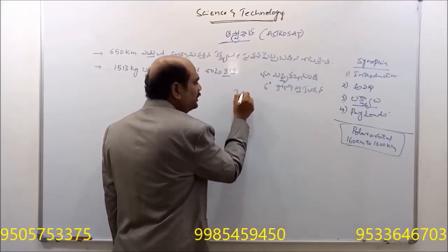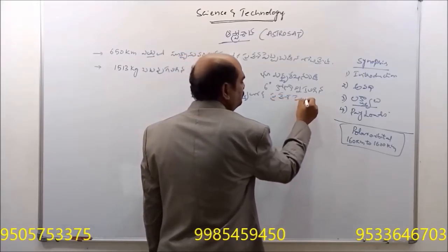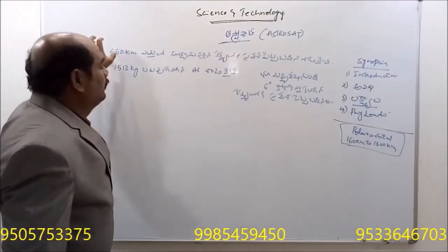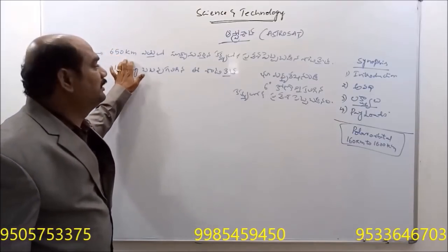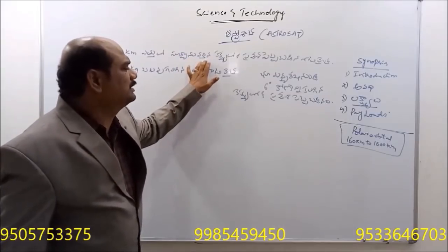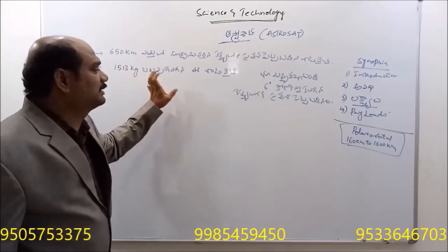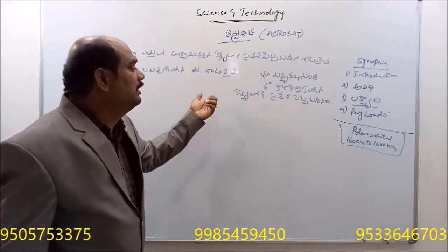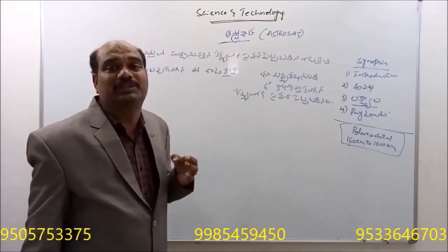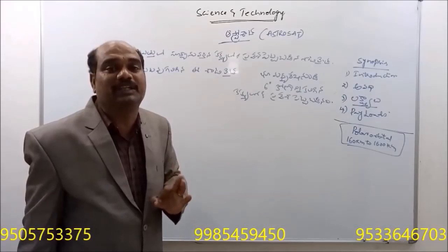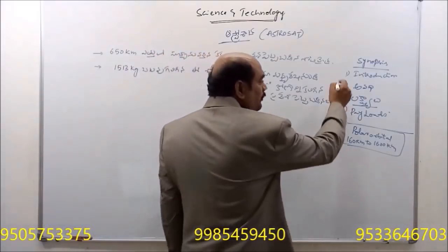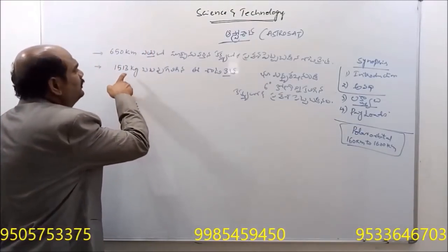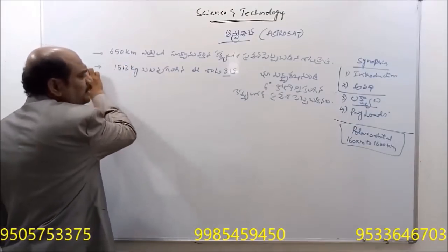The orbit is a low Earth orbit. The height of the orbit is 650 km. The weight of this satellite is 1513 kg. The inclination is 6 degrees towards the equator. This PSLV-C30 astronomical space observatory satellite has an orbit of 650 km and weight of 1513 kg.